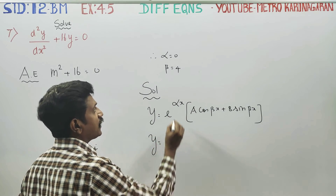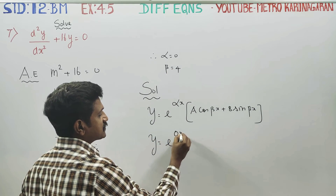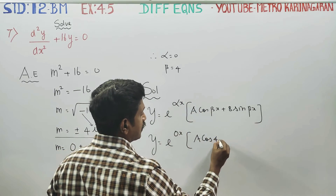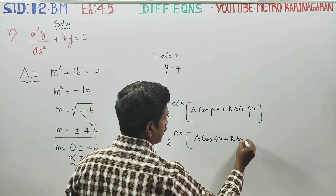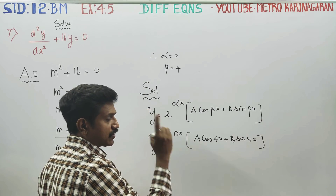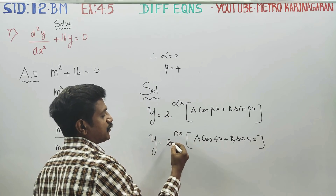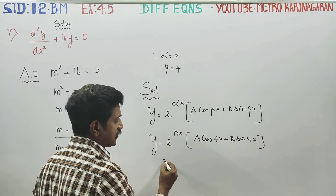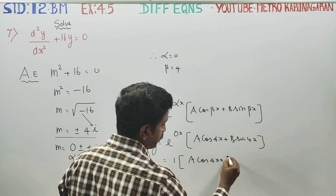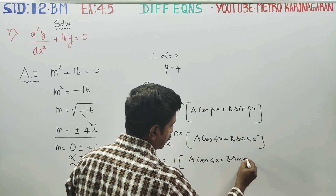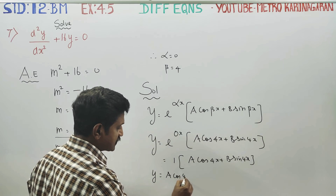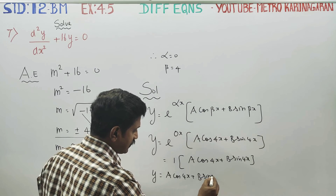Substituting the values: y = e^(0·x) times (a·cos(4x) + b·sin(4x)). Since 0 times x is 0, and e^0 equals 1, the solution simplifies to y = a·cos(4x) + b·sin(4x).